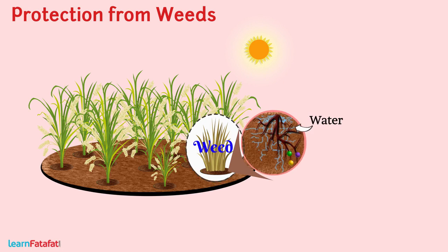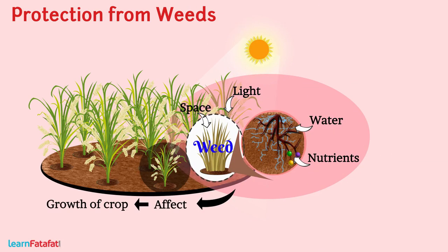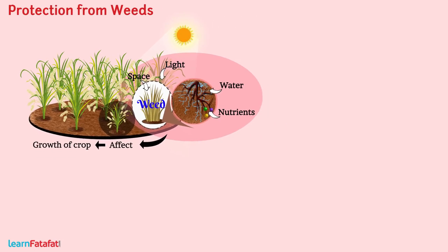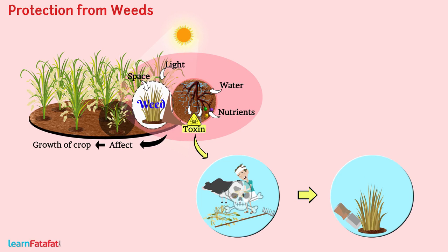Weeds consume water, nutrients, space, and light. Unavailability of all these factors affects the growth of the crop. In addition to this, some weeds also release toxins which may damage the crop plant and are hazardous to animals and human beings. Therefore, weeds must be removed from croplands.